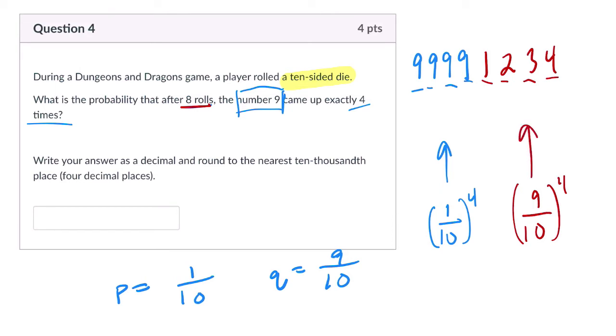Now we can't be done here because this could happen in another order. For example, I can get a 9, then 1, 2, 3, 4 non-9s, and then finish with 3 9s. So all the different groupings of positions that I can get these 9s are counted by a combination. It's called a binomial PDF. All the different groupings out of 8 positions that I can get 4 9s is 8 choose 4.